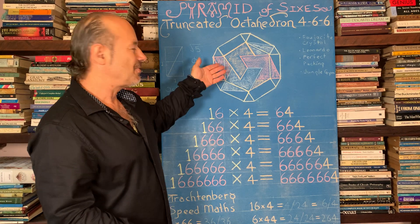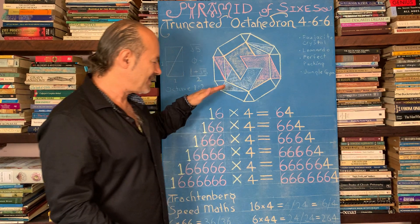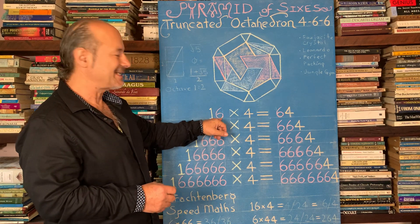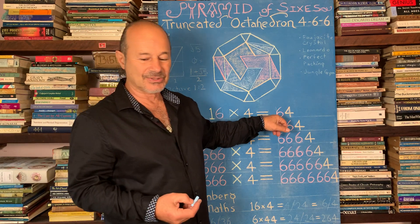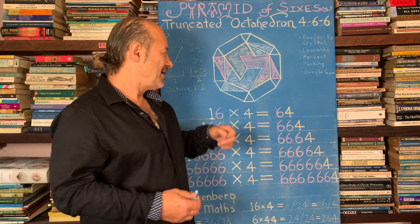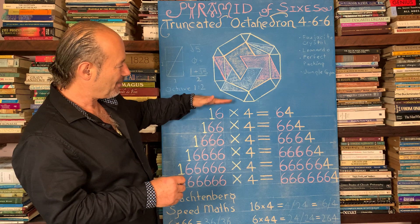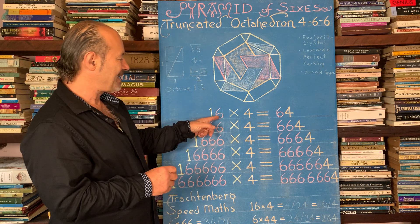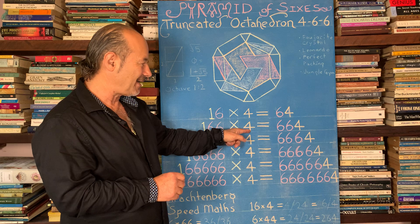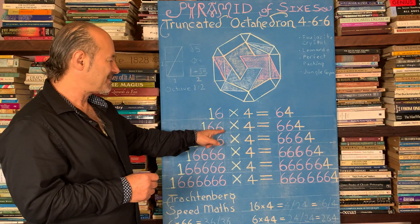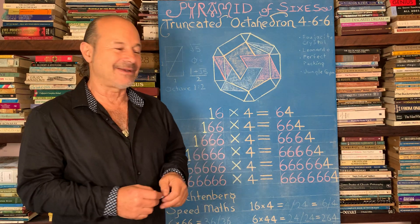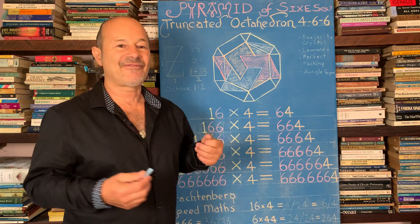How can we relate this knowledge to multi-dimensional geometries like this truncated octahedron? Let's examine this symmetry. I'm going to start off with the number 16 times 4. The reason why: 16 times 4 equals 64, because that's what's called 4 cubed — 4 times 4 times 4 equals 64 — and that number is special because that's the number of codons in our DNA. So the top point of our pyramid is 16 times 4 equals 64. Then I'm going to extend the 6, adding another 6: 166 times 4 equals 664. If we add another 6, we get 1666 times 4 equals 6664. You can see the pattern keeps extending with 6s and 4. So this lesson is about the fascination with 4s and 6s.